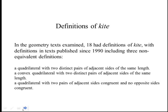For kites, in the geometry texts examined, 18 had definitions of kite. Looking at texts published since 1990, there were three non-equivalent definitions: one said a quadrilateral with two distinct pairs of adjacent sides of the same length; the next said a convex quadrilateral with two distinct pairs of adjacent sides of the same length; and the third said a quadrilateral with two pairs of adjacent sides congruent and no opposite sides congruent. The most inclusive is the first one. The second eliminates the concave kite, sometimes called a dart. The third excludes a rhombus — but with the first definition, a rhombus has all the properties of a kite.